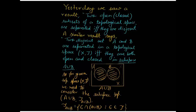We saw this good result that if two sets are open or closed subsets, and if they are disjoint, then they are also separated. Today we start with a similar result: if we take two disjoint sets A and B, then they are separated in a topological space (X, τ) if and only if they are both open and closed in the subspace A∪B.